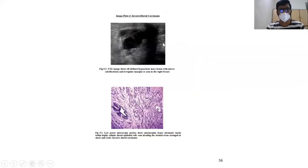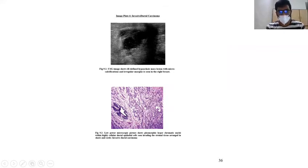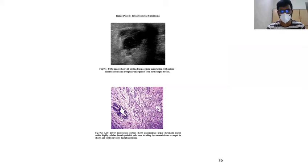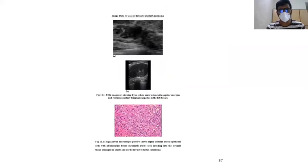This is another case of invasive ductal carcinoma. The ultrasonogram shows a diffuse hypoechoic mass with microcalcifications and irregular margins. The histopathological picture shows pleomorphic hyperchromatic nuclei with highly cellular ductal epithelial cells seen invading stromal tissue, arranged in sheets and cords, consistent with invasive ductal carcinoma.